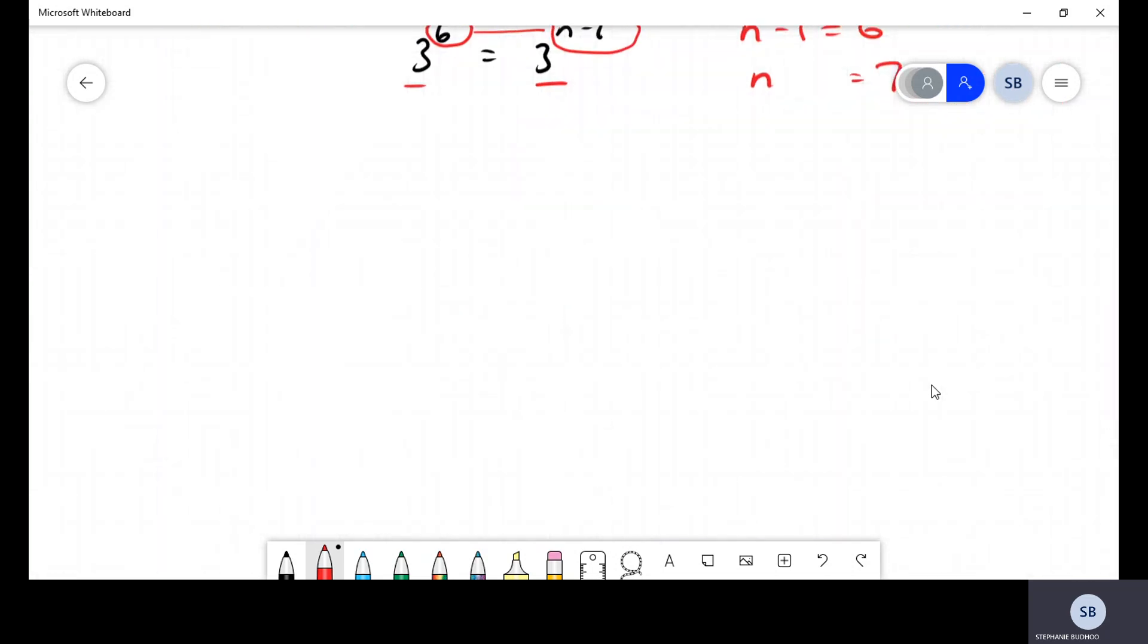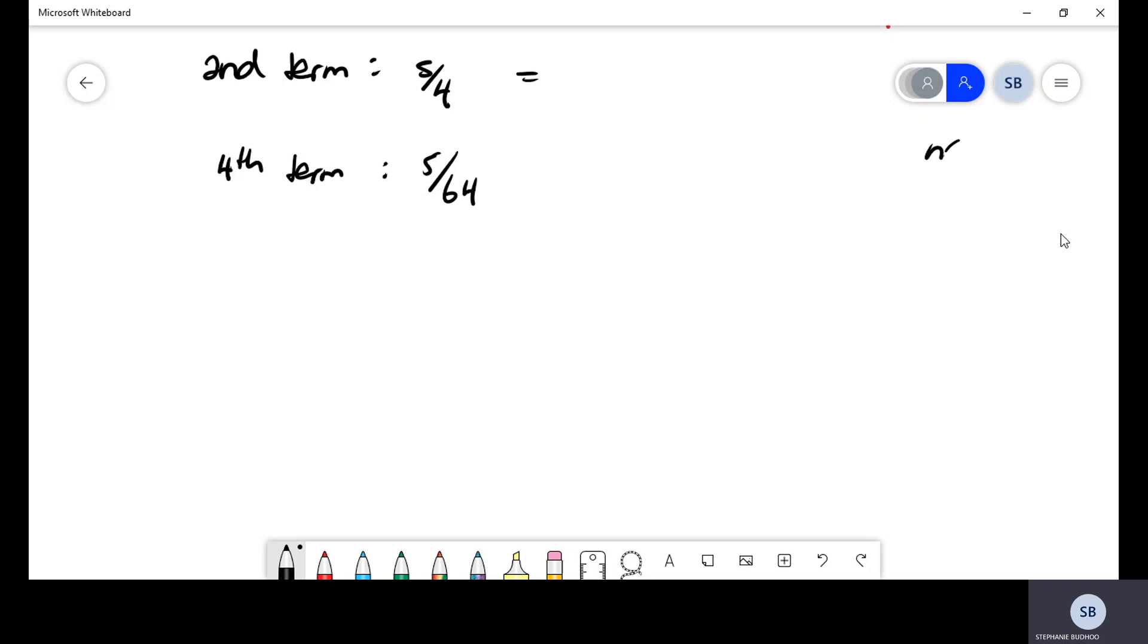Now let's look at a case that produces those simultaneous equations that you guys are wondering about. What if a question says the second term of a GP is given by 5 over 14 and that the fourth term is given by 5 over 64. What do we do? Well, since the nth term is given by AR to the N minus 1, then the second term would be AR to the power of 2 minus 1, which is 1. Similarly, the fourth term would be AR to the 4 minus 1, which is 3.